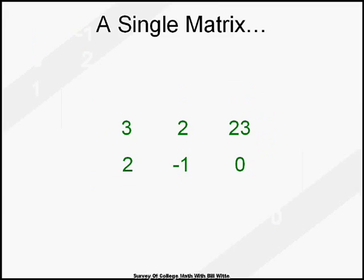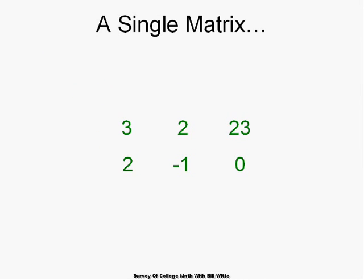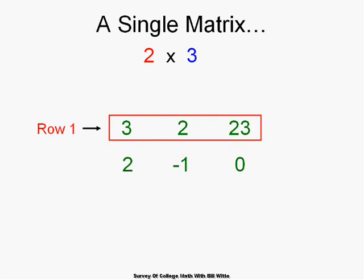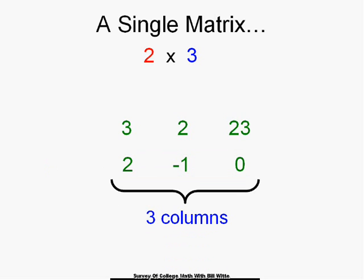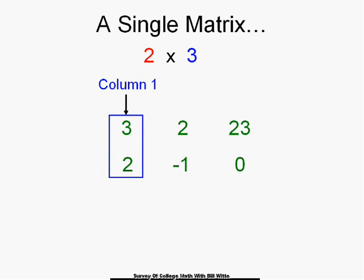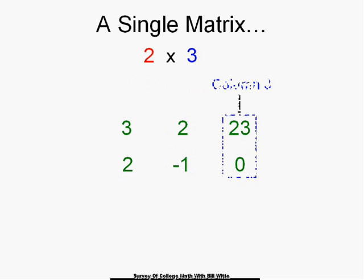Remember a single matrix? Here's an example. This one we would call a two by three matrix because it has two rows. We start counting at the top — row one and row two — and three columns. We start counting those from the left: column one, column two, and column three. There's an example of a single matrix.